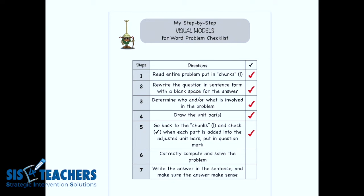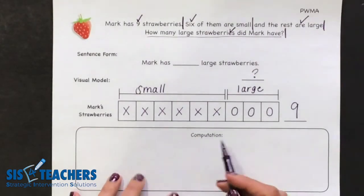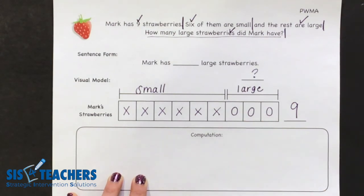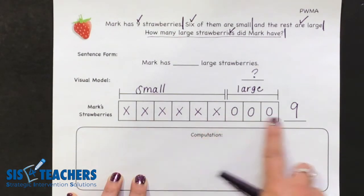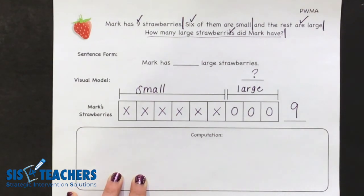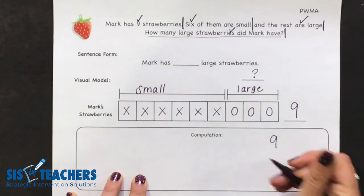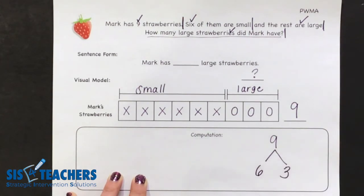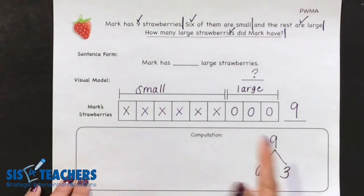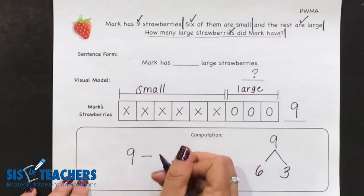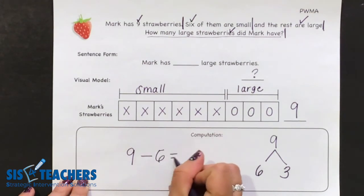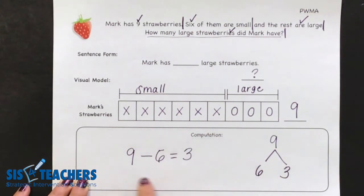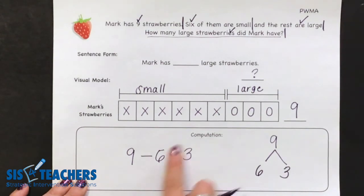Now is the time for students to start to compute. Step six says to correctly compute and solve the problem. In the bottom section we have the computation. Students can count and know very easily that there are three, because they drew it out, but we would like them to do a number bond or a number sentence. We started with nine strawberries, six are small and the rest are large — so in a number bond, six and three total nine. Students could also draw a picture or a ten-frame and cross it off. That computation is up to them.